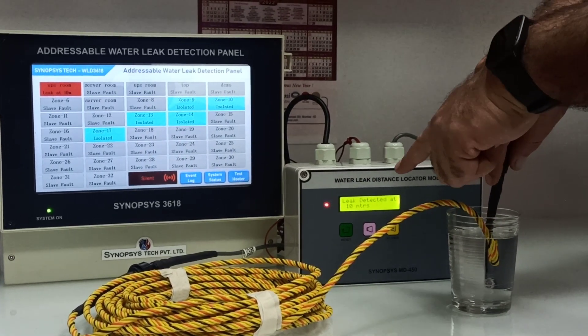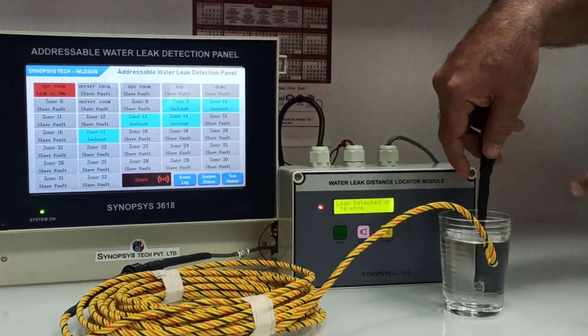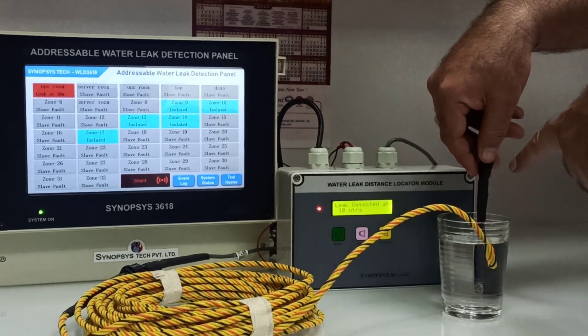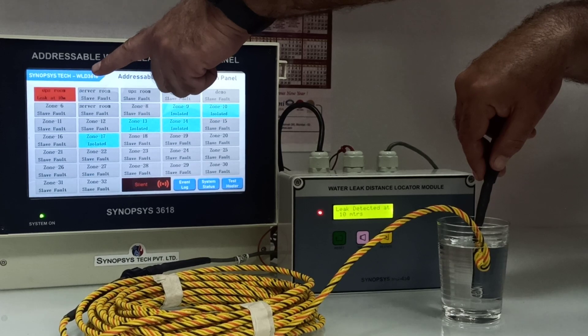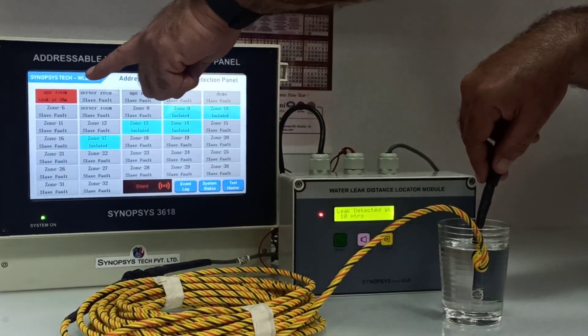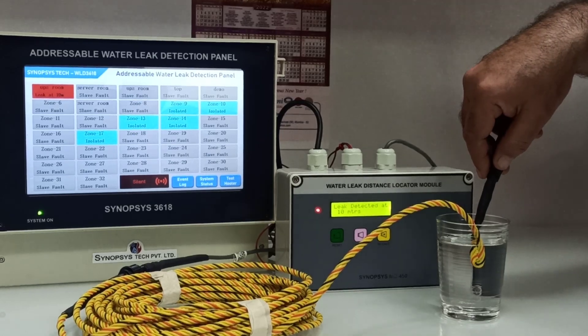Now it is showing on the LCD display - 10 meters, the leak has occurred. This is the end of the 10 meter cable. The addressable panel, that particular zone, the SIM, it has turned red and it is showing the distance - that is 10 meters.